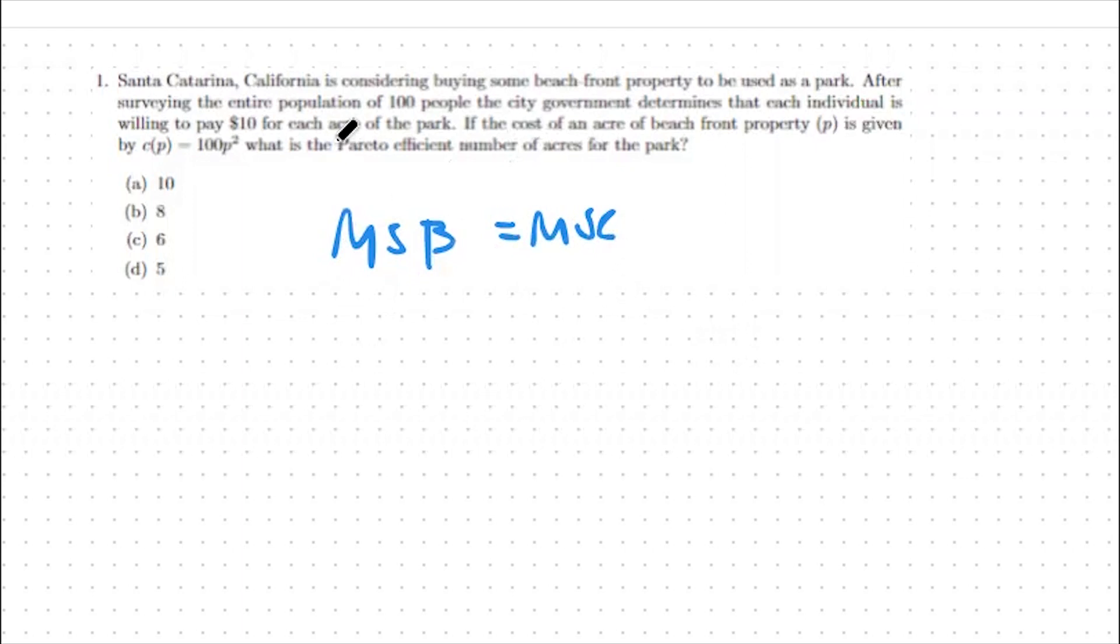In this case, what we're trying to do is maximize the amount of acres of parkland. So what we need to do is find our marginal social benefit first.